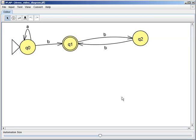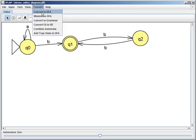What we're going to do is I'm gonna show you how to do this automatically. We're going to go to the Convert menu - forget the convert to DFA, that's not what you use. We're going to use 'Add trap state to DFA'.